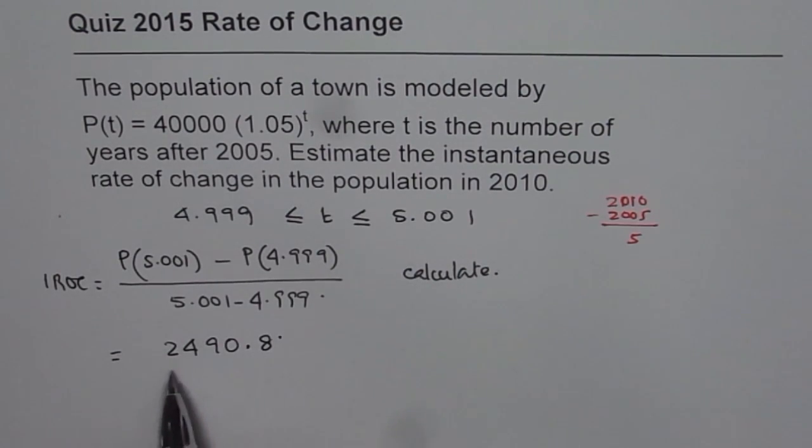So if at this stage, if you write 2490.8 as your answer, that is not quite right. Why?